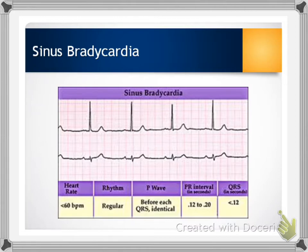We would be watching for signs and symptoms of decreased cardiac output, which could include pale cool skin, hypotension, weakness, chest pain, dizziness, syncope, confusion, and shortness of breath. Treatment for bradycardia in an emergent situation could include atropine. If it's more of a chronic situation, the patient might be considered for a pacemaker, and you may consider adjusting or holding some of their current medications if that is determined to be the cause.